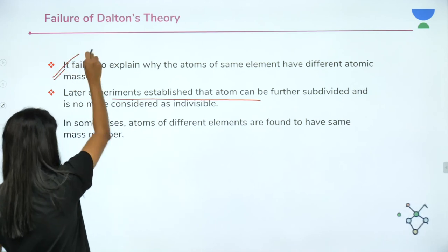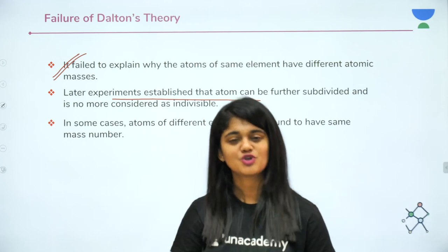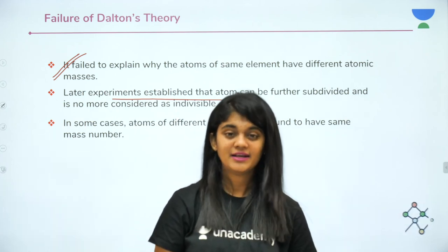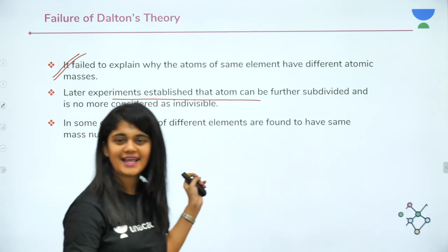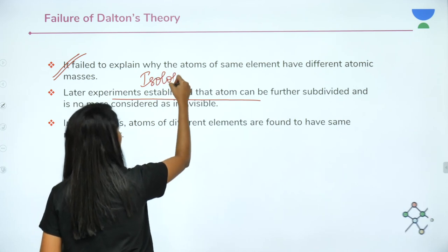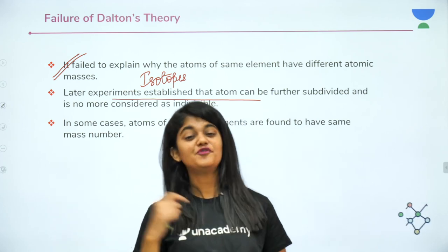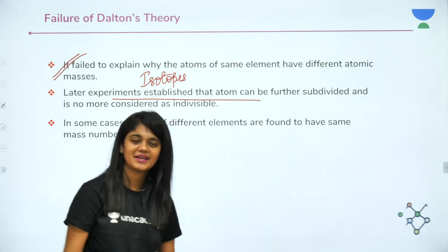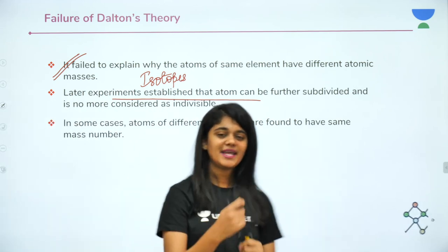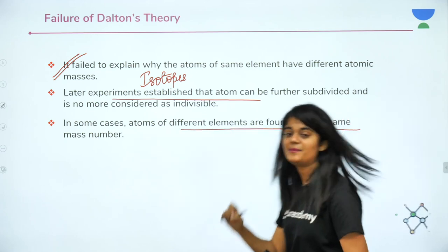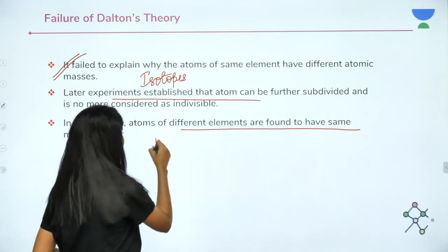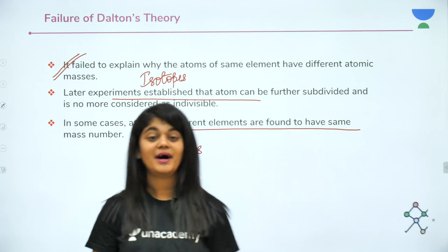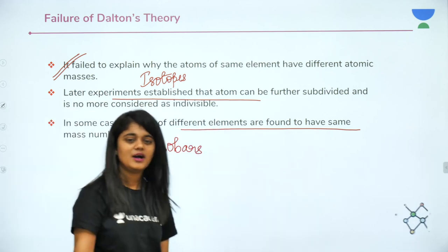Another failure of Dalton's theory is that it failed to explain that atoms of the same element can have different atomic masses. You know that two atoms having the same atomic number but different mass numbers are called isotopes. Dalton's theory could not prove the presence of isotopes. A third failure is that in some cases, atoms of different elements are found to have the same mass number — these are called isobars, meaning atoms with similar atomic masses but different atomic numbers. All these failures arose from Dalton's theory.